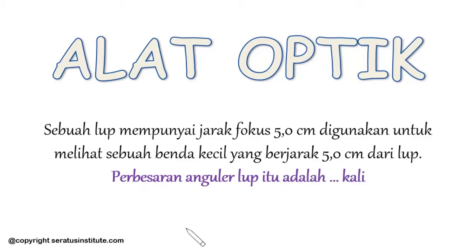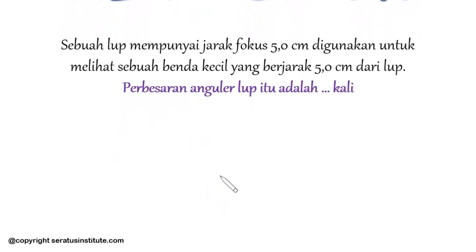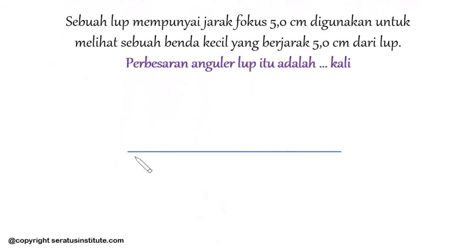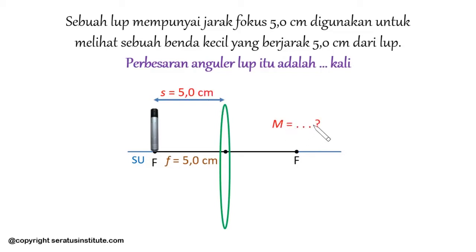Sobat 100, to understand this, look at the following illustration. Let's say this is the principal axis of the magnifying glass. Here is the magnifying glass. I'll draw it here on the right and left of the magnifying glass are the focal points, point F. Like this. The focal length is known to be 5 cm. In front of the magnifying glass there is an object where the object distance from the magnifying glass is also 5 cm. Now, the question is what is the magnification of this magnifying glass?